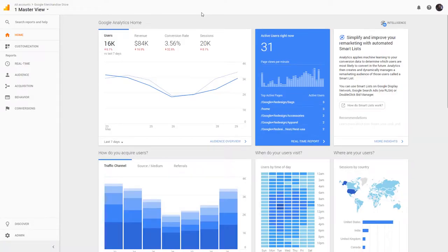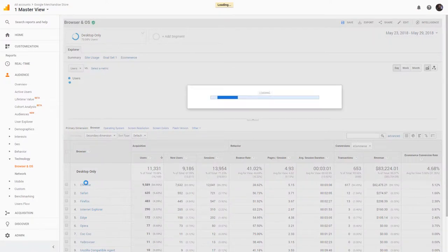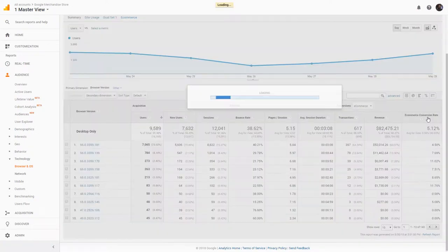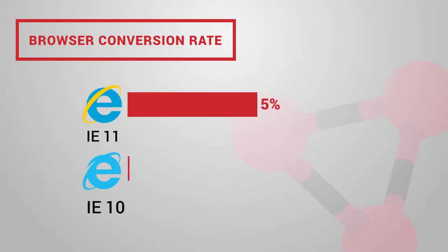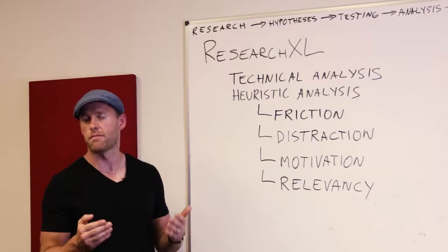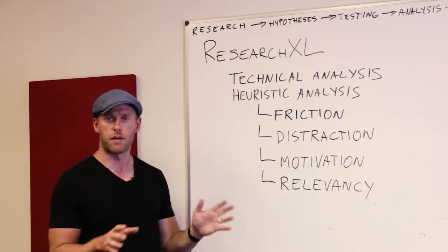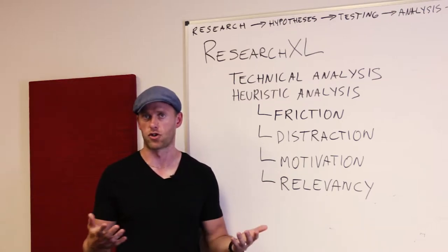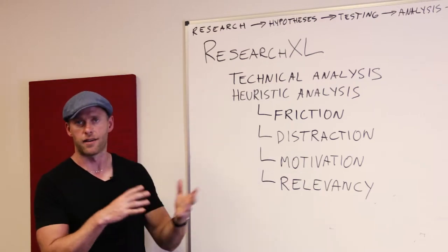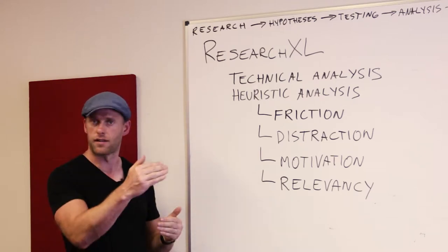In your digital analytics platform — say Google Analytics — pull out the browser report and compare conversion rate per browser version within the same browser family. For instance, if your website converts at 5% for Internet Explorer 11 but only 2% for Internet Explorer 10, that's more than a two-times difference. That's probably due to bugs or weird UX issues. Go investigate. If you don't want to do it yourself, there are QA companies you can hire for technical testing.